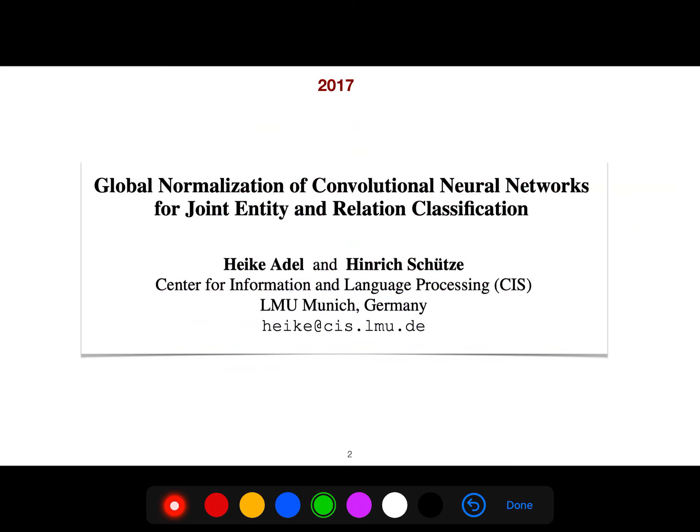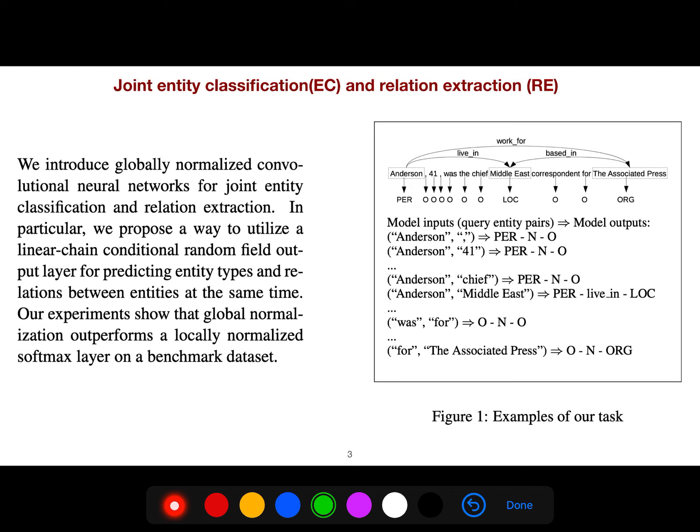This 2017 article by Heinrich Schütze introduces globally normalized convolutional neural networks for joint entity classification and relation extraction. You're familiar with named entity recognition: person, organization, location, and other tags.